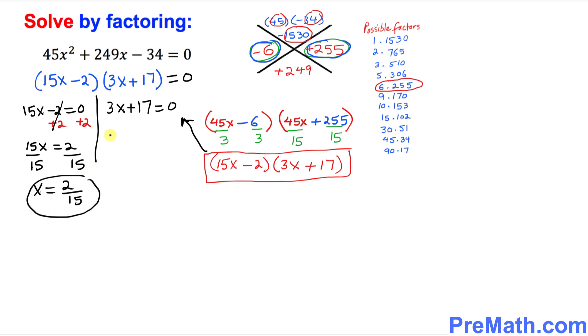And on this side, we want to isolate x as well. So I want you to subtract 17 from both sides. This reduces to 0. We got 3x equal to negative 17. You divide both sides by 3. So x turns out to be negative 17 over 3. That is another solution.